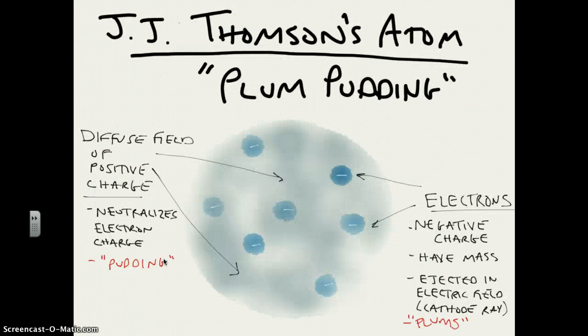That led to a revision of Thompson's plum pudding model, which predicted that this positive diffuse field of positive charge that was there to cancel out the negativity of the electrons wouldn't really provide a barrier. However, the fact that some of those alpha particles bounced off or even bounced back suggested that there had to be something very dense that prevented them, and positive that prevented them from going through.